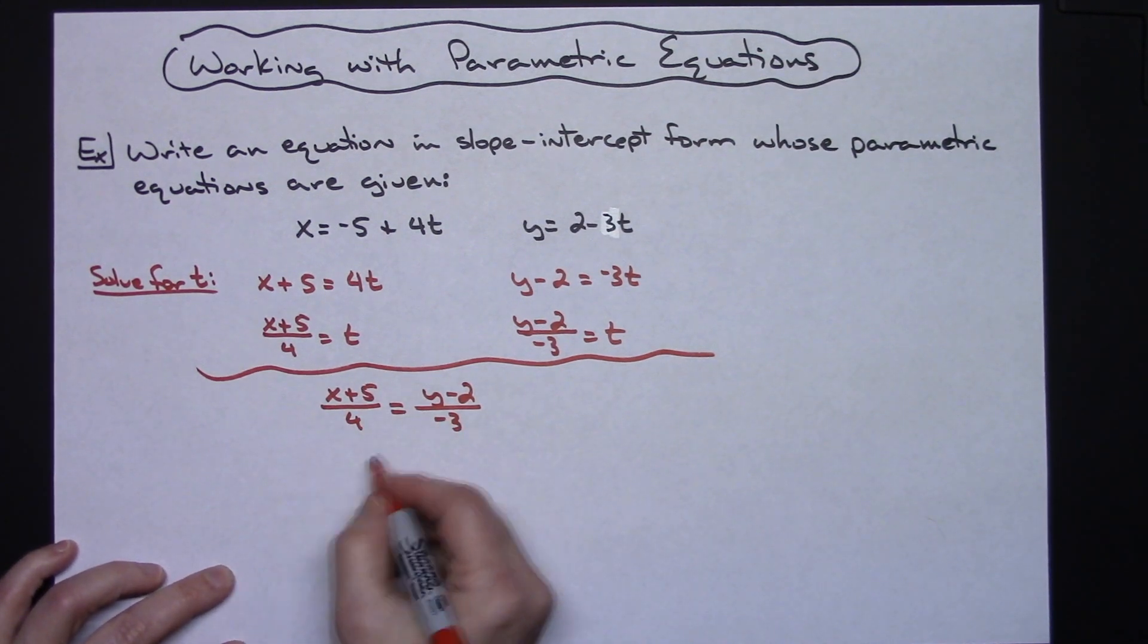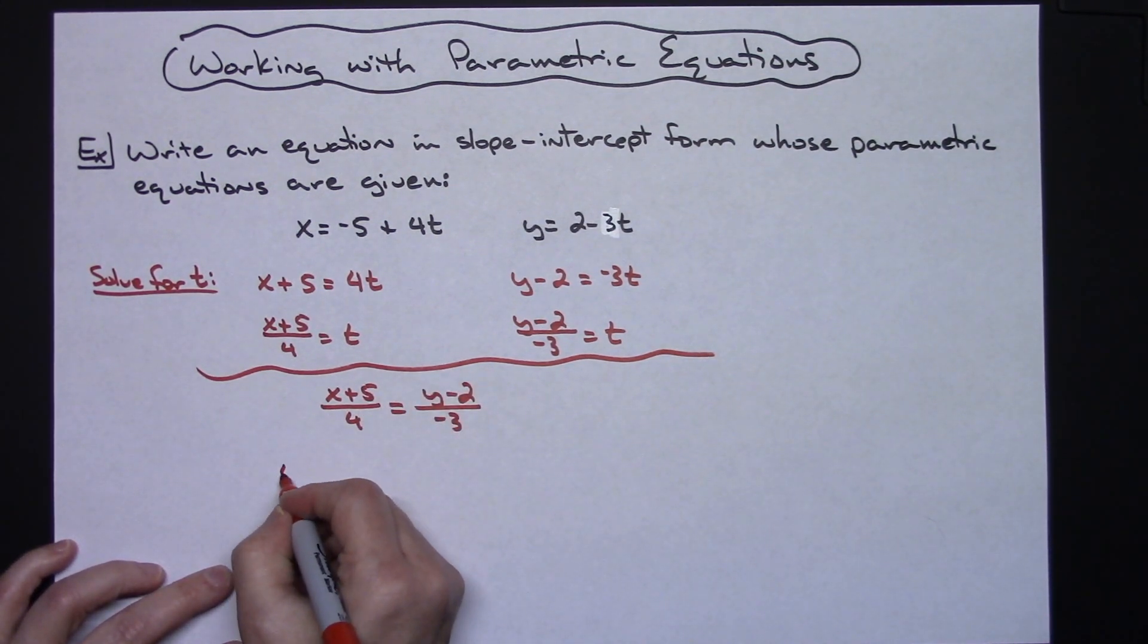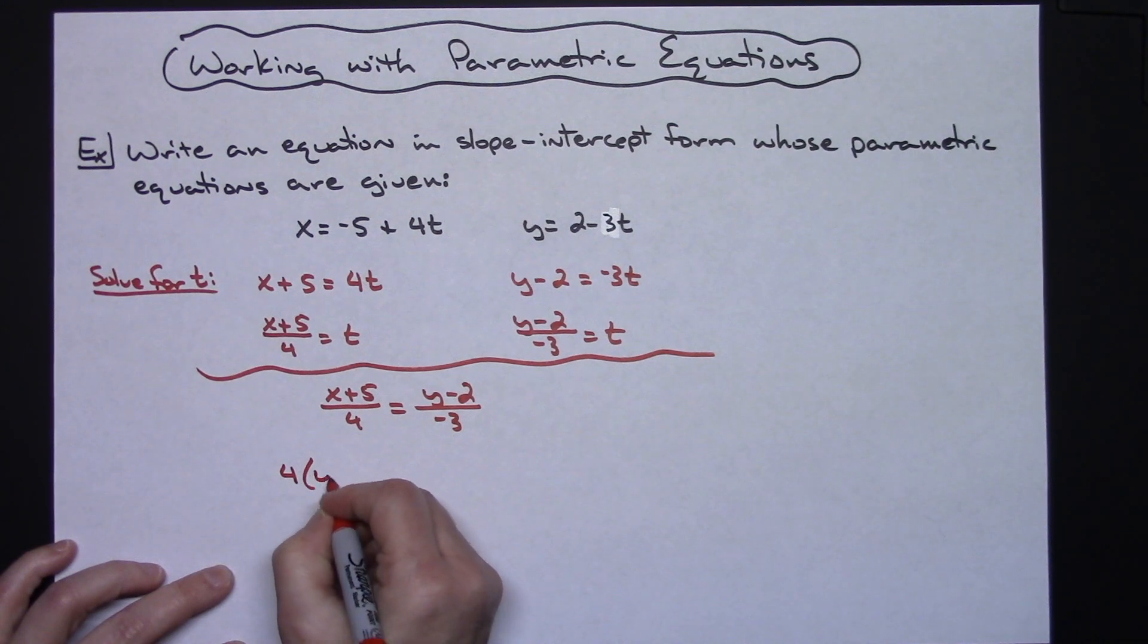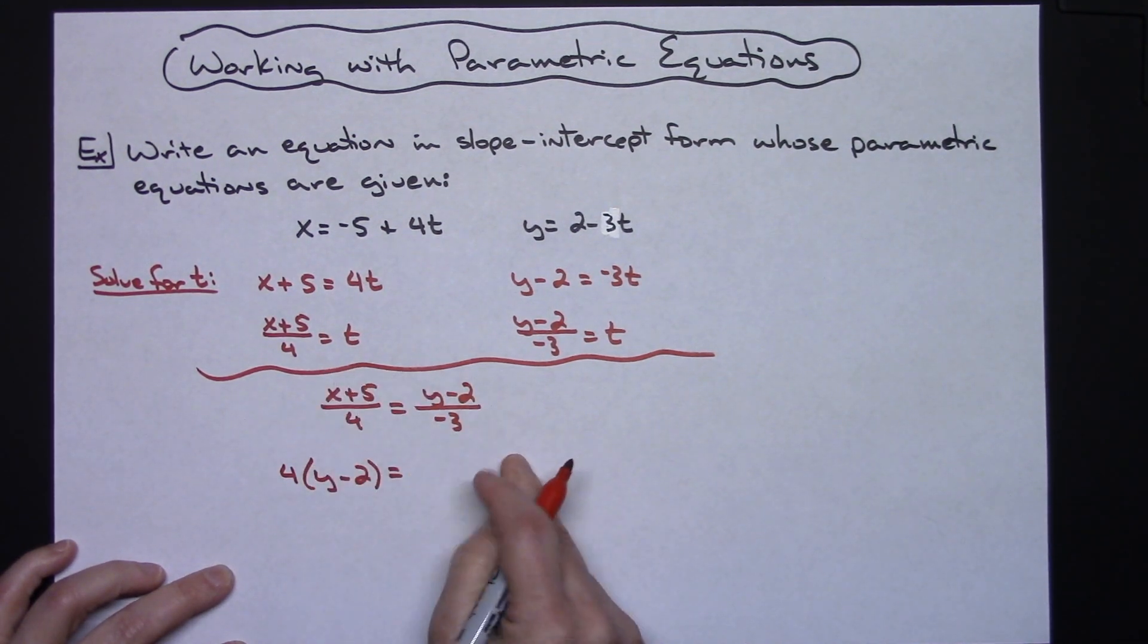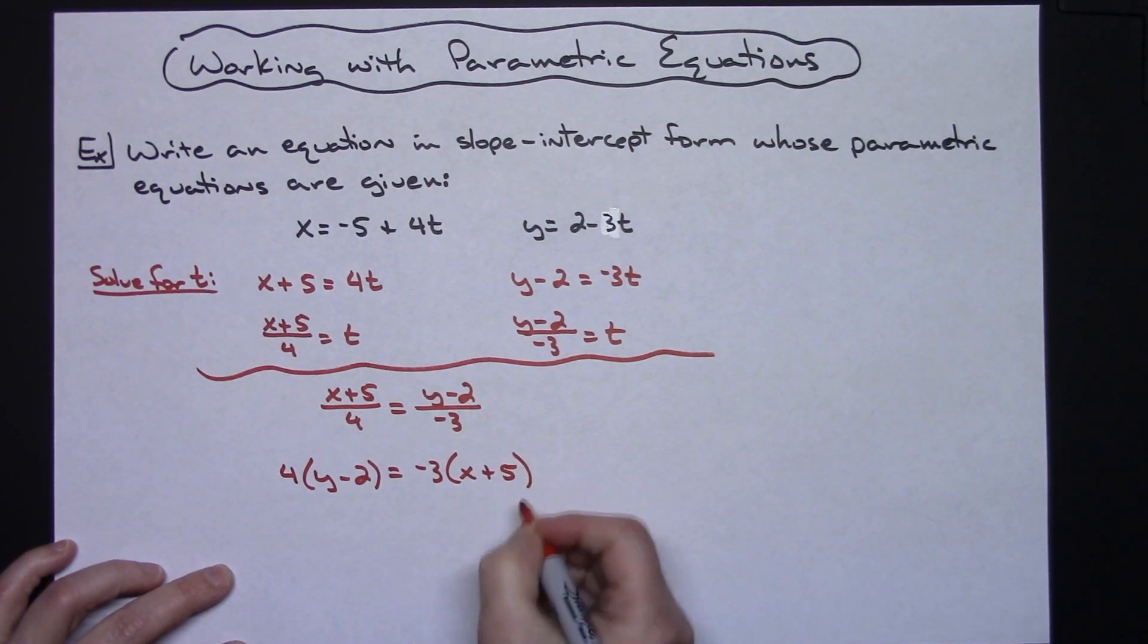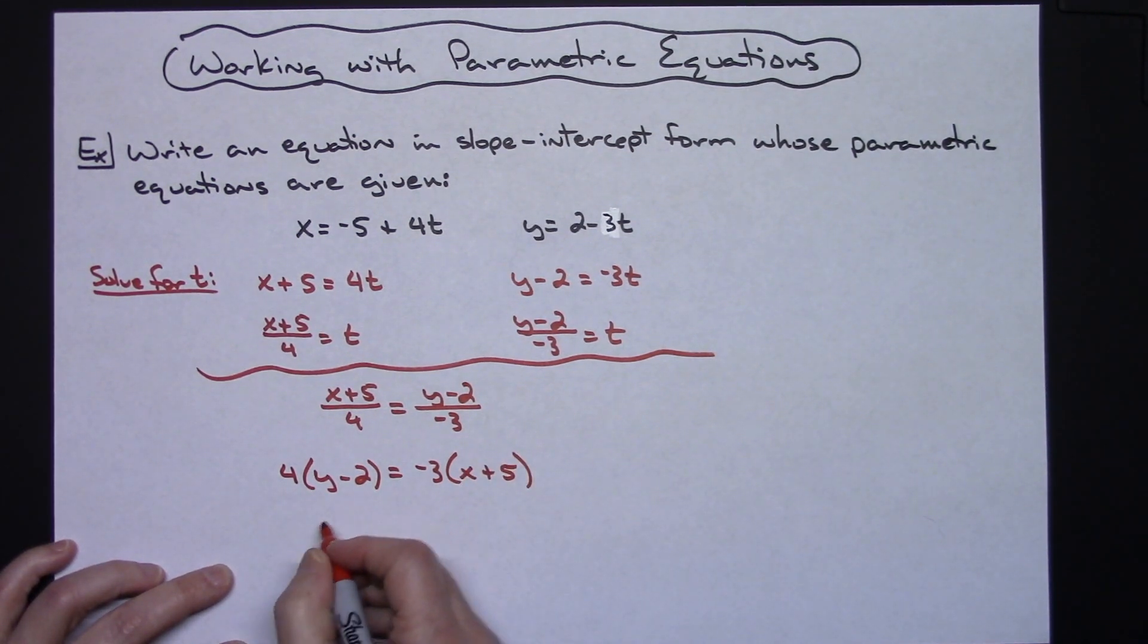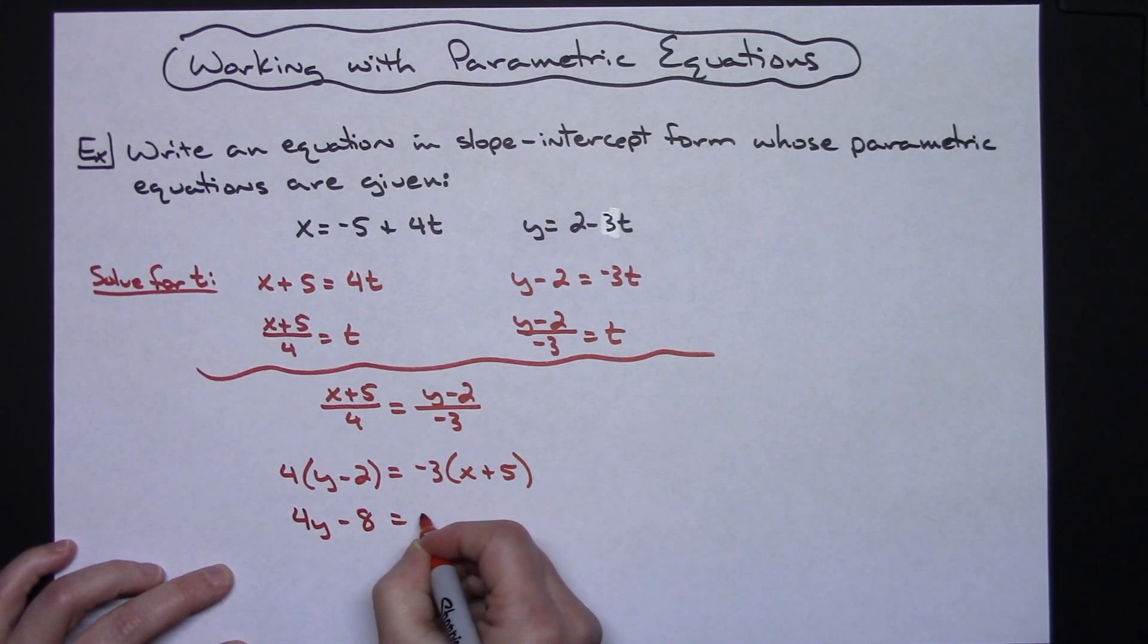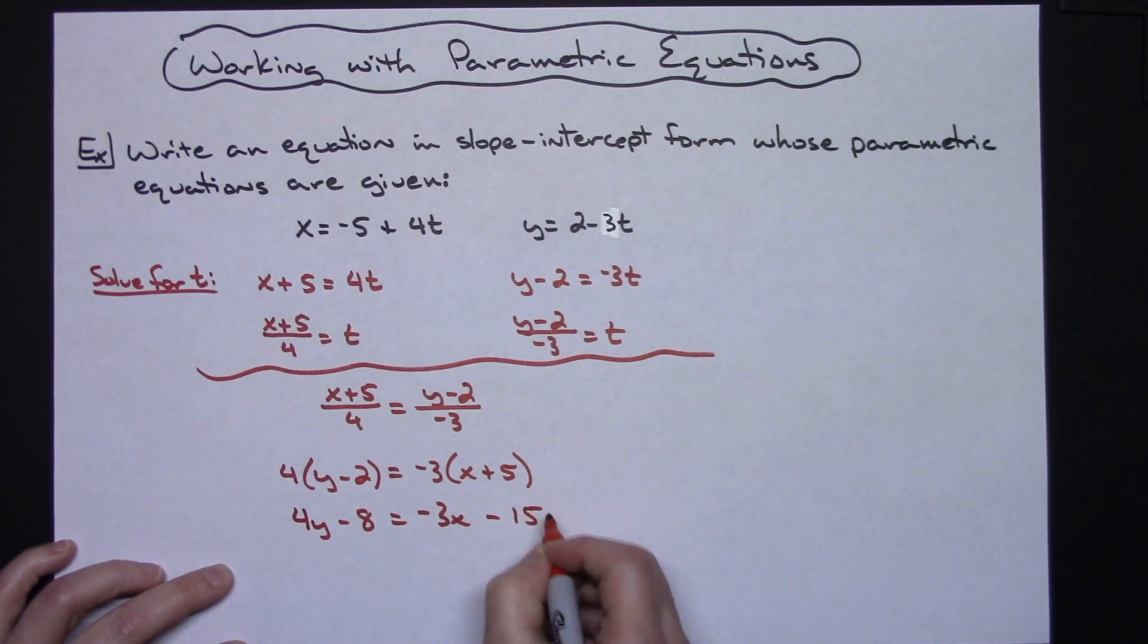I'm going to cross-multiply. So I'll have 4 times the quantity (y - 2) = -3 times (x + 5). Doing a little distributing, I'll have 4y - 8 = -3x - 15.